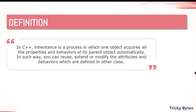In object orientation, we take an object, cut it out from its parent, take its properties and behaviors, and then reuse them in our code. We can reuse the code, modify it, or extend it as needed.